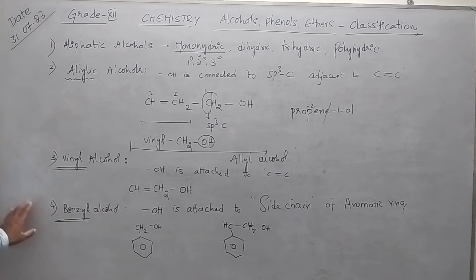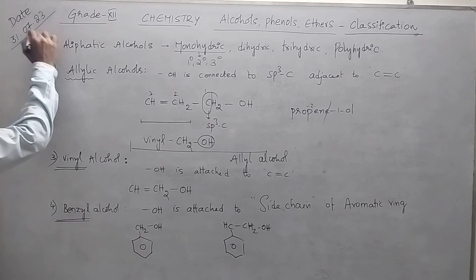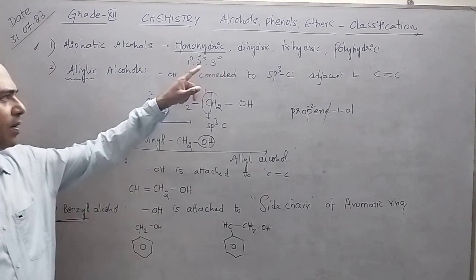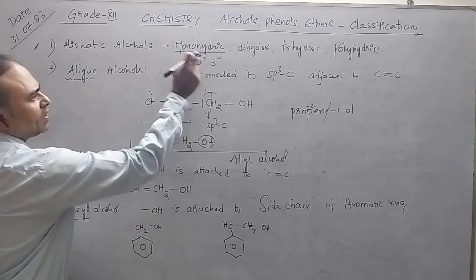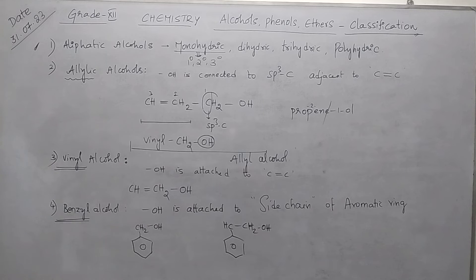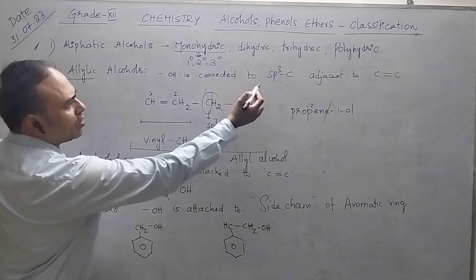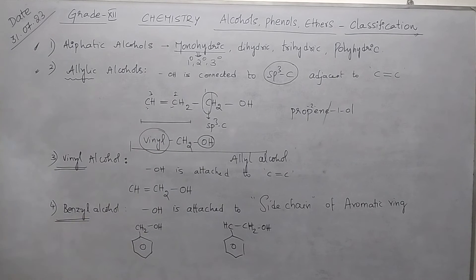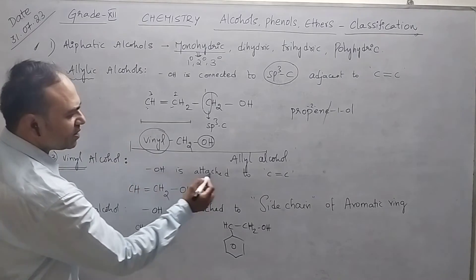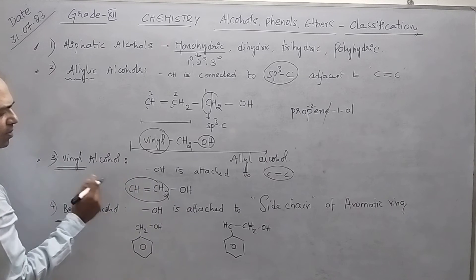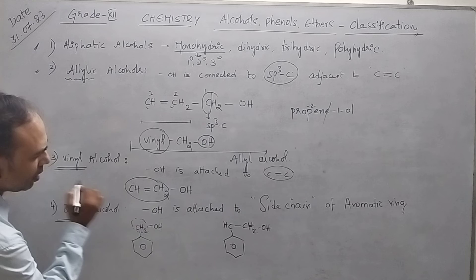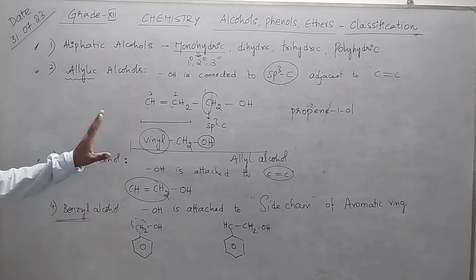To summarize the classification of alcohols: first, aliphatic alcohols — OH on saturated aliphatic hydrocarbons, classified as mono-, di-, tri-, and polyhydric, and further as primary, secondary, or tertiary. Second, allylic — OH on sp3 carbon adjacent to C=C (allyl alcohol). Third, vinyl — OH attached directly to C=C. Fourth, benzylic — OH on the side chain attached to the aromatic ring.